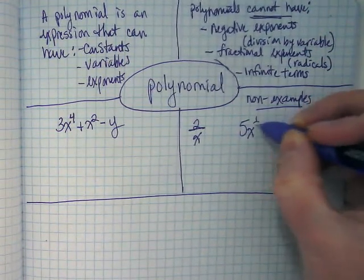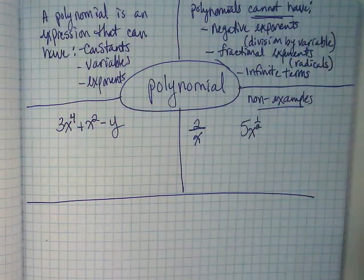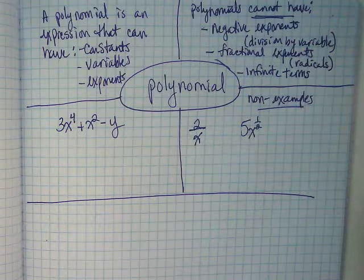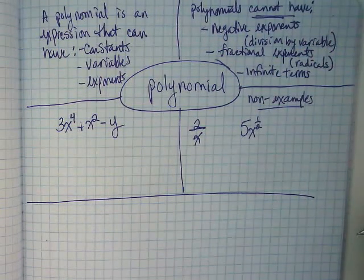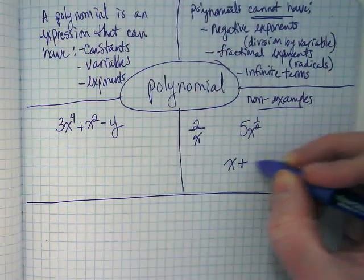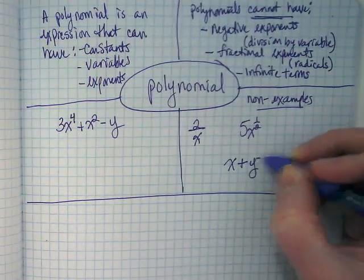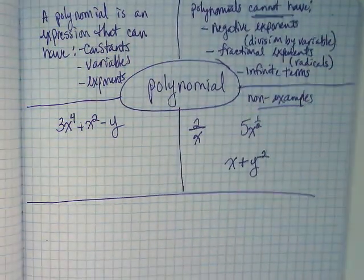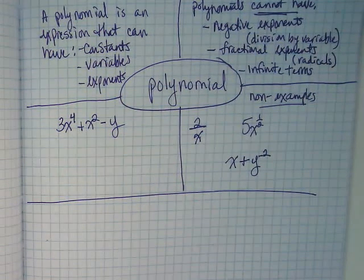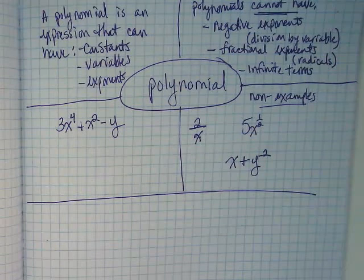5x to the one-half as an exponent, that's a fractional exponent, and we don't do fractional exponents as polynomials. x plus y to the negative 2 power is a negative exponent. These are non-examples.